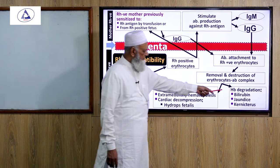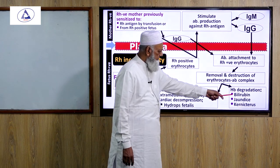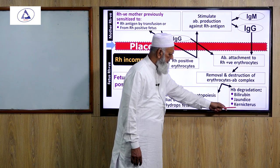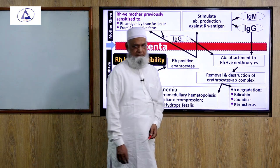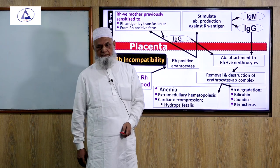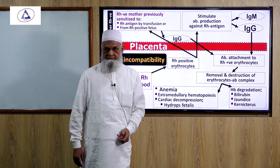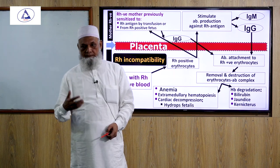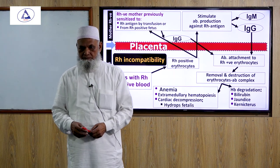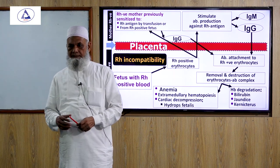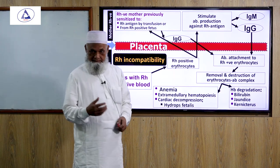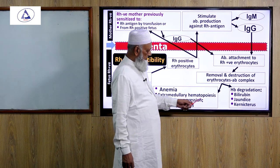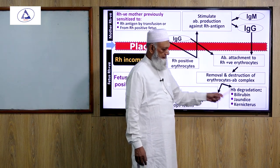Removal and destruction of the erythrocyte-antibody complex results in anemia, extramedullary hematopoiesis, and cardiac decompression, leading to hydrops fetalis. Hemoglobin degradation yields bilirubin, causing excess jaundice and kernicterus. Kernicterus occurs when bilirubin enters the brain tissue and damages the brain.